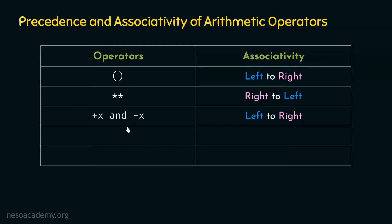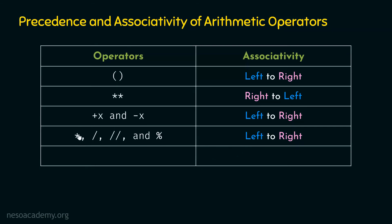The next group of operators includes multiplication, division, floor division, and modulus. These four operators share the same precedence but have lower precedence than the unary operators. Their associativity is left to right. For example, if an expression contains both multiplication and division, we read left to right and whichever operator comes first is evaluated first. After this group, we have binary plus and minus — addition and subtraction — which have the lowest precedence among all arithmetic operators, also with left-to-right associativity.